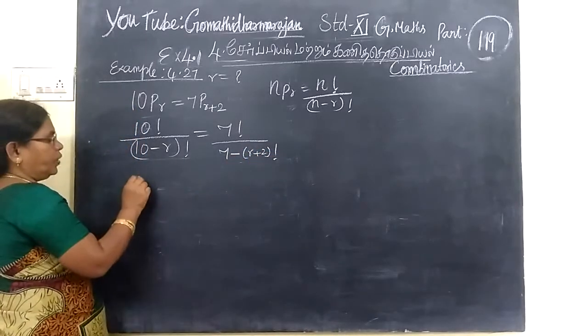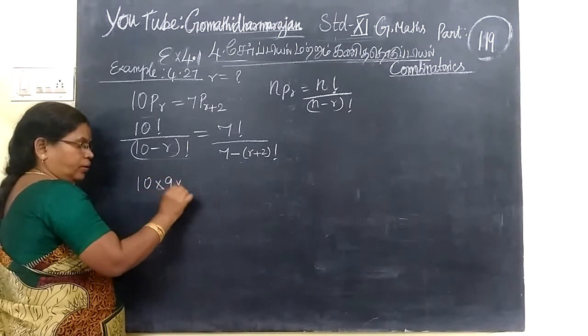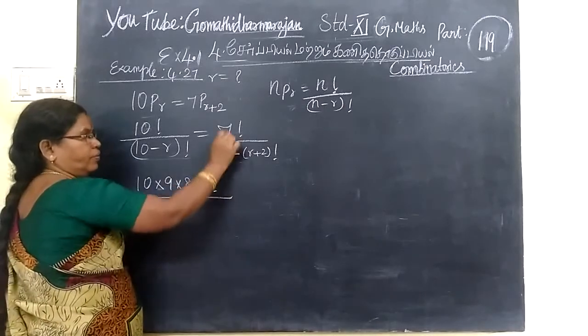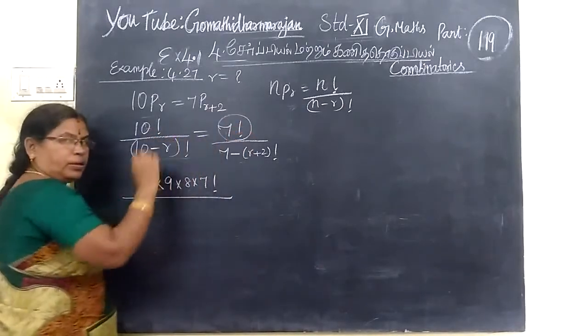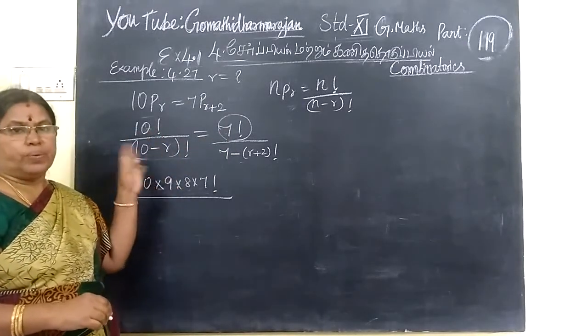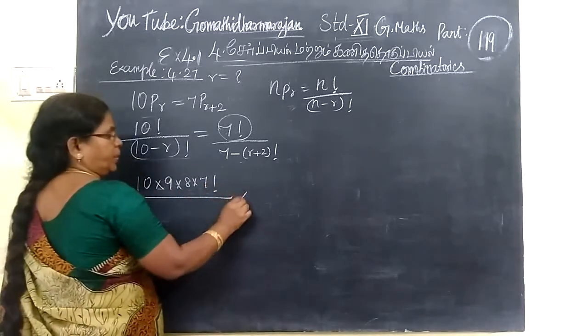Then now 10 factorial will be expanded. 10 factorial will be 10 into 9 into 8 into 7. Now 7 factorial can be written below. Now 10, 9, 8, 7, don't start when you get it.